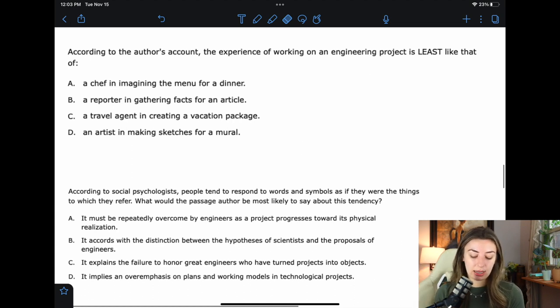B, a reporter gathering facts for an article. See, that reminds me of what the author thinks that scientists do. They just gather facts. They don't construct anything. They don't produce anything. They're just gathering things that are already there. So actually, I think that that's probably a good answer choice. C, a travel agent creating a vacation package. So to me, it's becoming clear that it's the verbs. And what is D? An artist making sketches for a mural. So it's kind of clear when you just look at the verbs. What does the author think the engineers do? They imagine. They create. They make. They don't gather. That's what scientists do. So I think probably B is the right answer there.